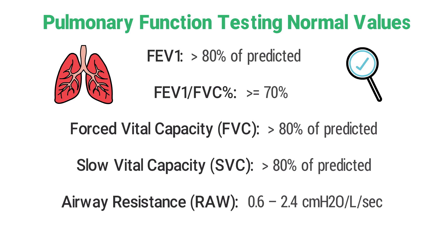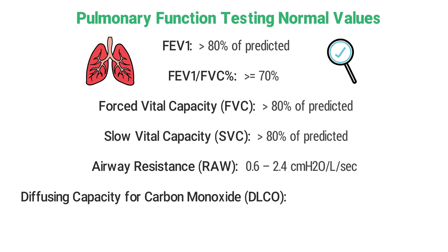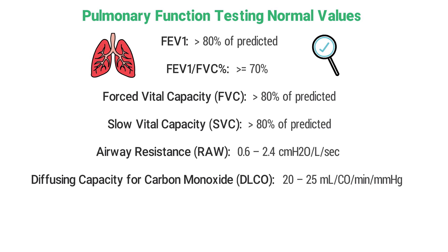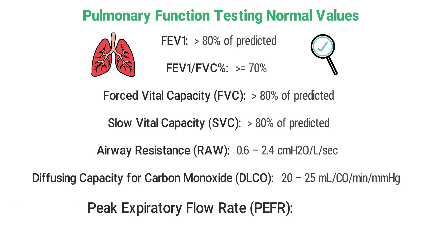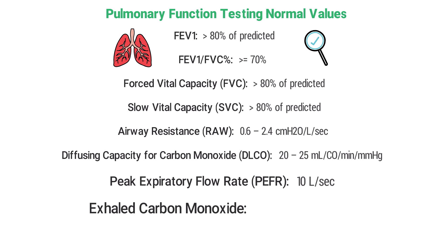is 0.6 to 2.4 centimeters of water pressure per liter per second. The normal DLCO, or diffusing capacity for carbon monoxide, is 20 to 25. The normal peak expiratory flow rate is 10 liters per second, and the normal value for exhaled carbon monoxide should be less than 7 for non-smokers.